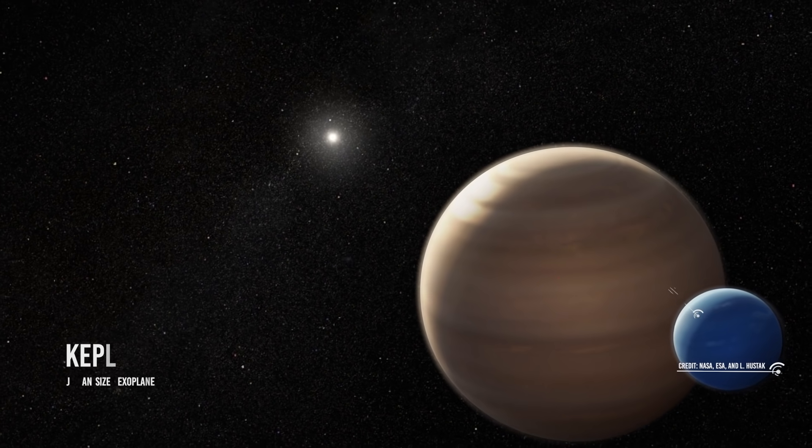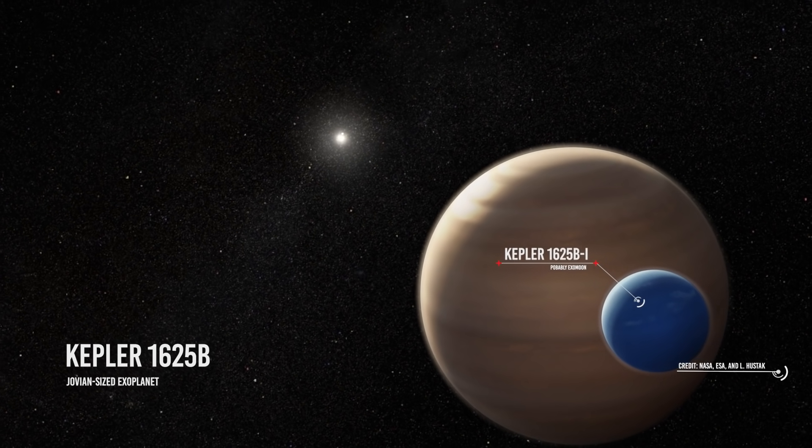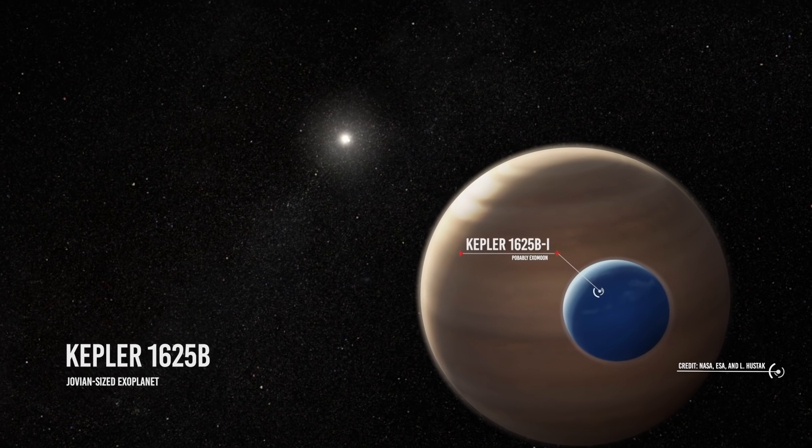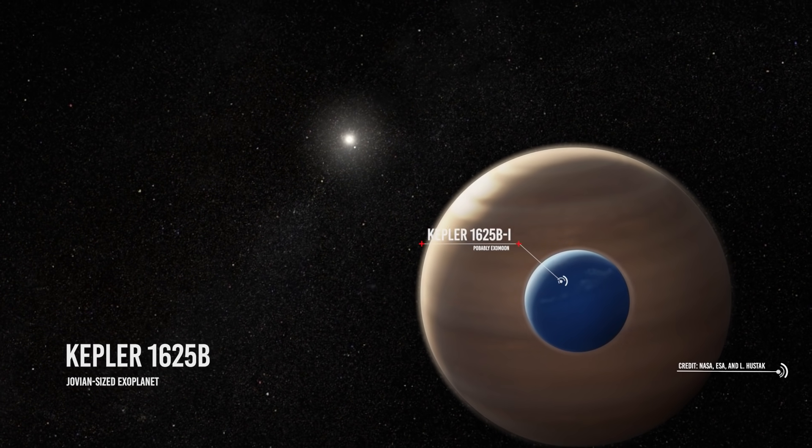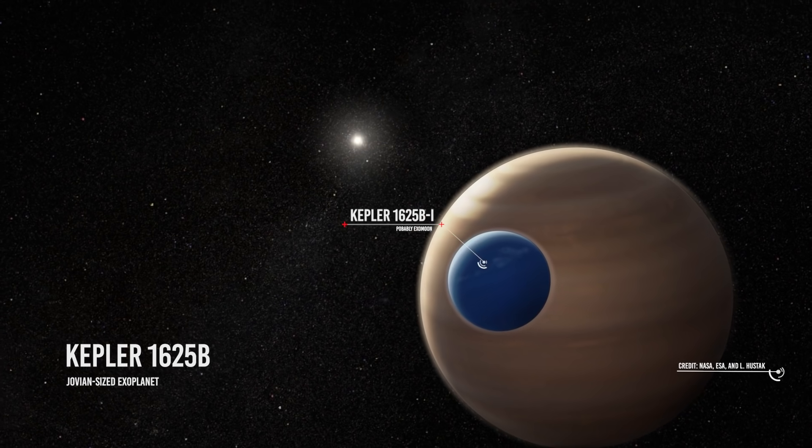For his part, Kipping reiterates that the newly discovered exomoon, the only one that has passed all the tests after examining at length the transits of 70 promising planets, is a stubborn signal. We've tried everything, but it won't go away.